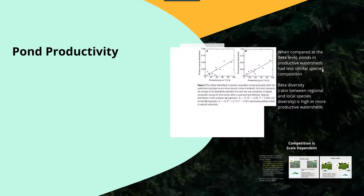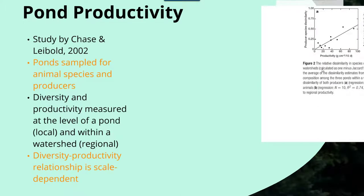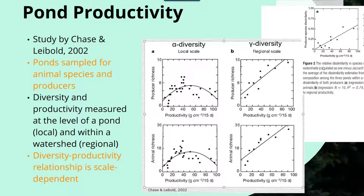Here are a couple of examples to demonstrate this concept of scale and patterns. In a study by Chase and Leopold in 2002, they took a look at pond samples for animal species and primary producers — photosynthesizing organisms. They found that diversity and productivity measured at the level of the pond locally, and they also collected information at the regional level of the watershed. In terms of alpha and gamma diversity — alpha diversity being within a particular region, gamma diversity being within the whole ecosystem — there is a clear diversity-to-productivity relationship that is scale dependent.